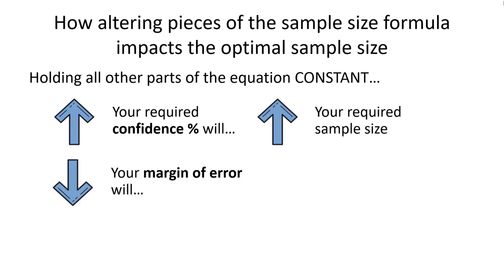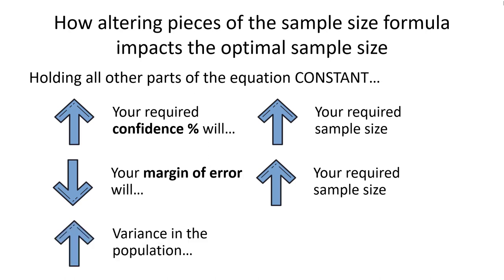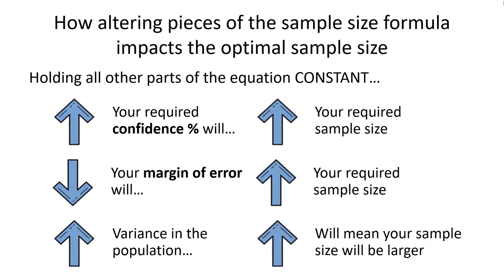If you decrease your margin of error — meaning you want less error in your estimates — again, you're going to have to pay for it with an increased required sample size. Finally, as the estimated variance in the population becomes larger, meaning values are more dispersed away from an average, the natural consequence is that it will require us to gather more data to achieve our optimal sample size.